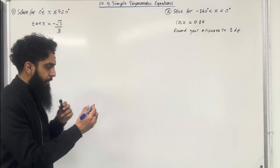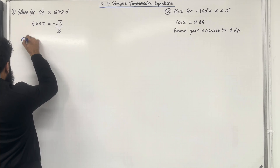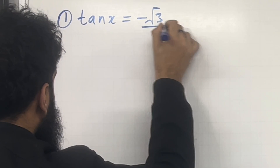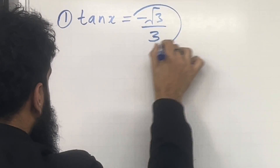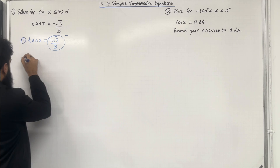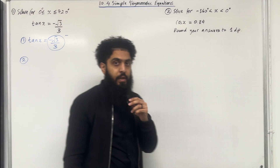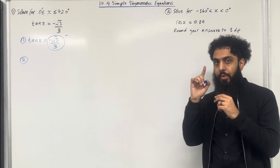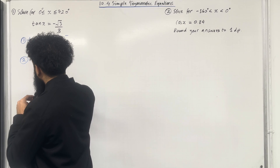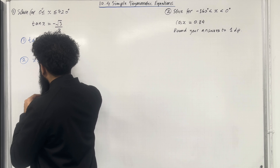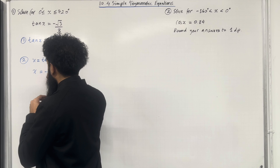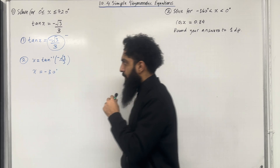I'll explain this step by step. Step number 1: we write down the trigonometric equation. Step number 2: tan x equals minus square root 3 over 3. We circle the value of tan x and indicate that it is a negative value. We then work out the first solution for x, called the principal solution. x is obtained by taking tan inverse of minus square root 3 over 3, which gives x equal to minus 30 degrees — the principal solution.